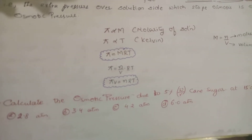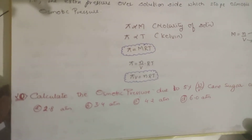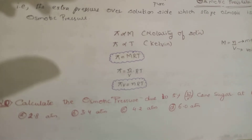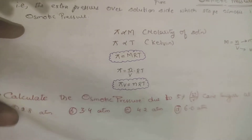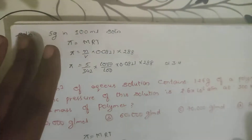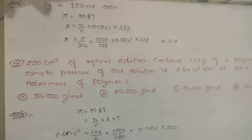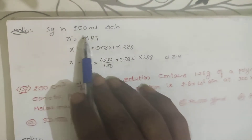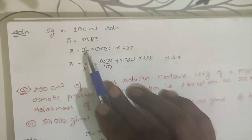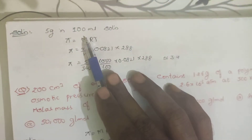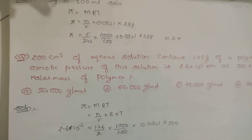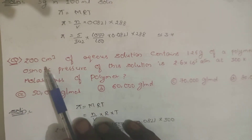Question: Calculate the osmotic pressure due to 5% weight by volume cane sugar at 15°C. Options: 2.8, 3.4, 4.2, or 6 atmospheres. Pause and try. Answer: 5% w/v means 5 g in 100 mL. Using π = MRT = (n/V)RT = (5/342) × (1000/100) × 0.0821 × 288 K ≈ 3.4 atmospheres.